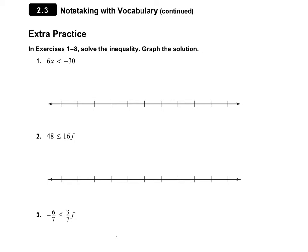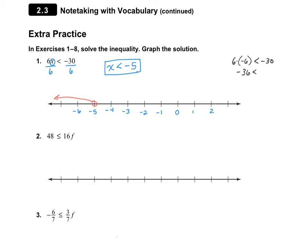Let's take a look at number 1. We have an X here, so we need to get rid of the 6 by dividing by 6. Some people think there's a negative here so they need to flip the sign — nope. The number that you're dividing by or multiplying by has to be negative. In this case, we are dividing by a positive number, which means our sign does not flip. So X is less than negative 5. If we draw that on the number line, we have an open circle at negative 5, heading down. It's an open circle because it's just less than — no equal to. Let's check: plugging in negative 6, we get 6 times negative 6, which is negative 36, and negative 36 is less than negative 30 — that works.